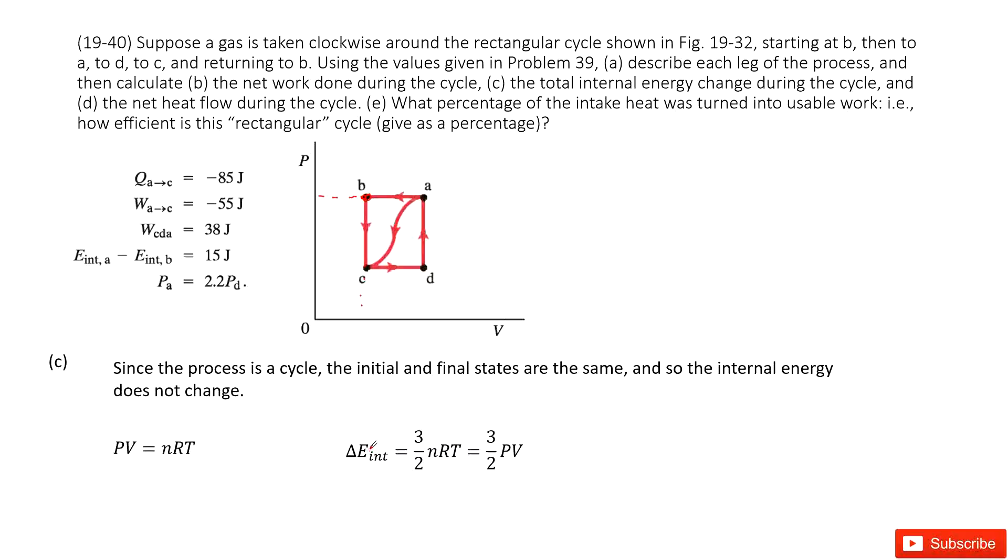How can we see the internal energy change? Because the internal energy change equals 3/2 nRT. Now, can you replace the term nRT by considering the ideal gas law? Ideal gas law tells you PV equals nRT. So you can replace nRT as PV. And in this function, you can see P is not changed, V is not changed. For initial point B and final point B, so that makes internal energy not change.